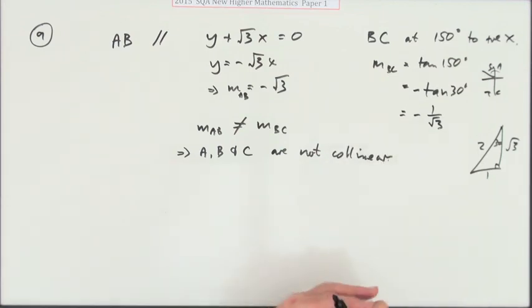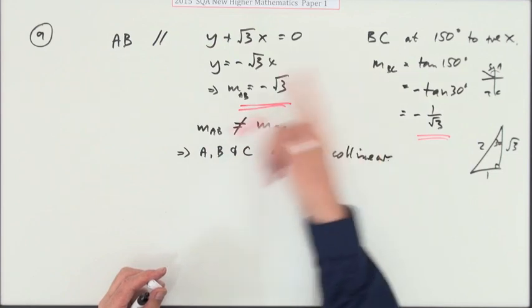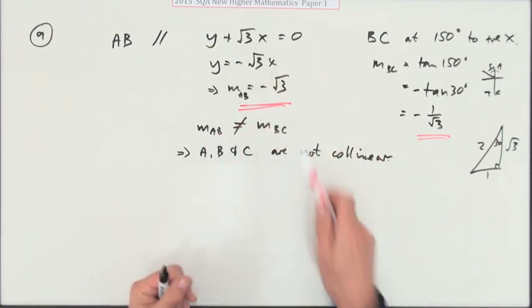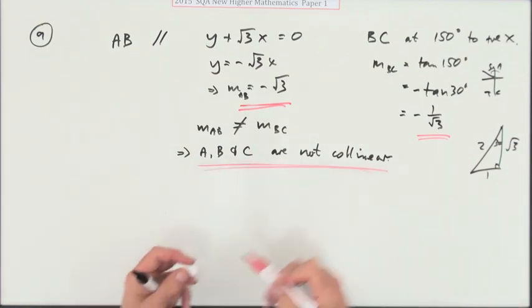Usually you get the question the other way around where the gradients are the same, and then you have to make the additional statement: Are they joined up at B? But here, since they don't even have the same direction, that's the end of it.